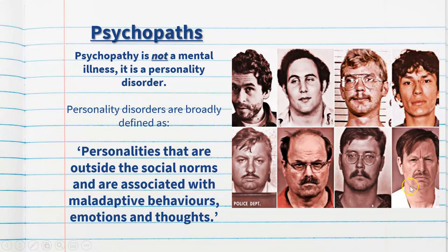Psychopathy is not a mental illness — it is classed as a personality disorder in the DSM-5, which I'll also talk about later in this video. Personality disorders in psychology are broadly defined as personalities that are outside the social norms and are associated with maladaptive behaviors, emotions and thoughts.